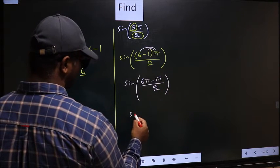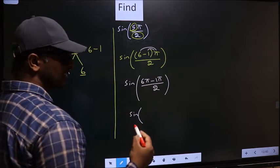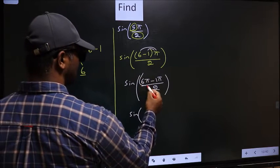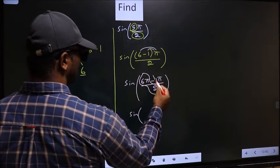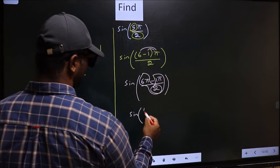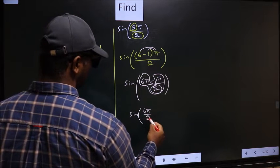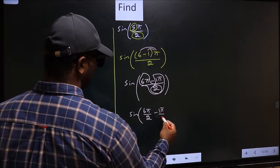Now sin. You should split the denominator in this way. That is 6π/2 minus 1π/2.